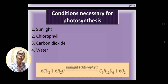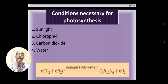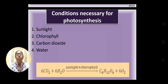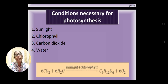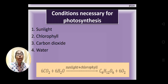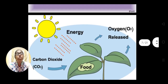The output is food or carbohydrate (glucose) and oxygen. This process is just the reverse of respiration — in respiration the plant takes in oxygen and releases carbon dioxide, but in photosynthesis it is reversed: the plant takes in carbon dioxide and releases oxygen. That is why the content of carbon dioxide and oxygen in the atmosphere remains balanced.